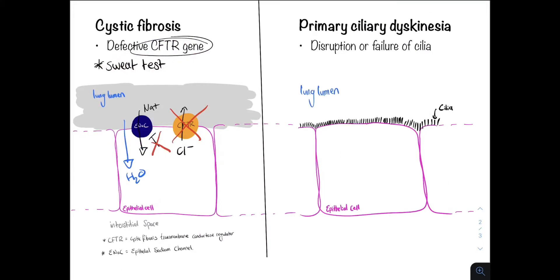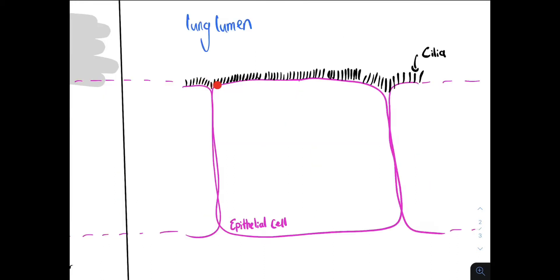Now in primary ciliary dyskinesia, the pathophysiology involves the cilia. So there is disruption or failure of the cilia. Normally, the cilia move in a synchronized rhythmic motion - they all move in one direction, allowing for clearance of mucus, bacteria, and foreign particles.